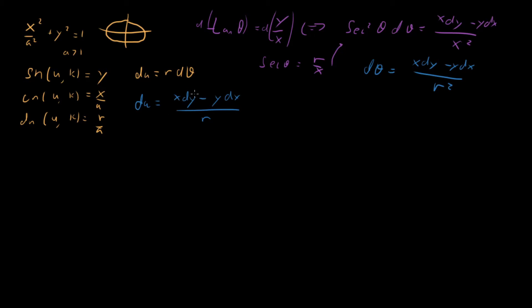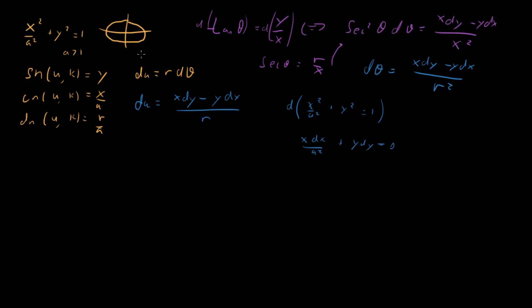There's one other relationship to derive, based on the constraint that we're on an ellipse. Taking the differential of both sides of x²/a² + y² = 1 gives x dx/a² + y dy = 0. This effectively solves for dx in terms of dy just from the constraint that we're working on an ellipse.